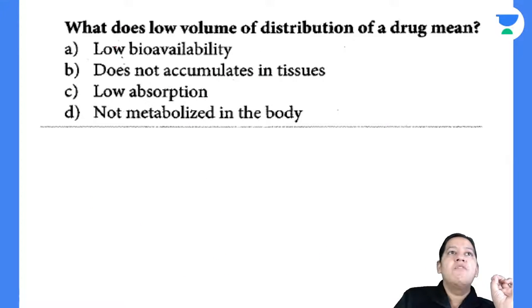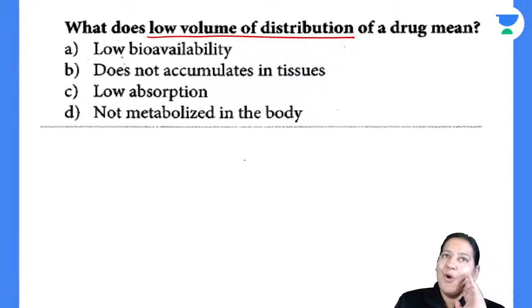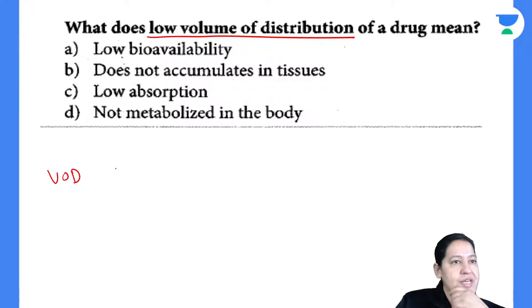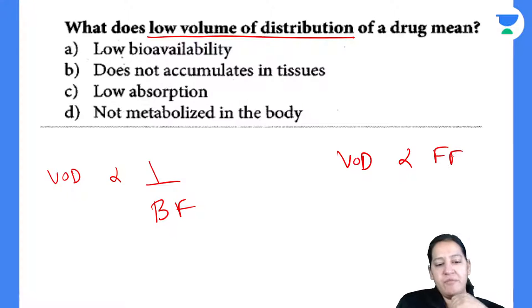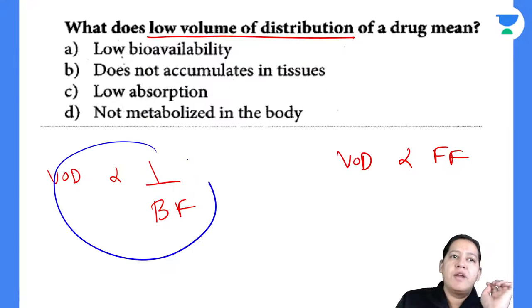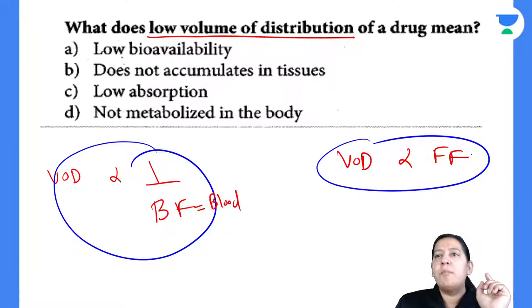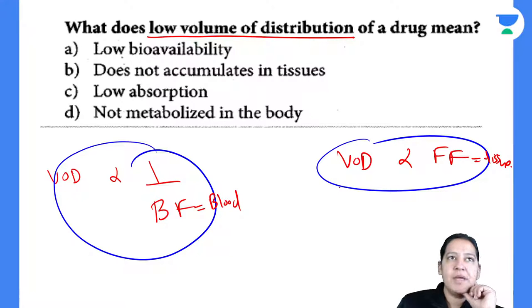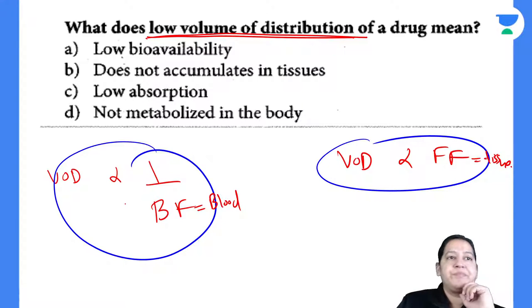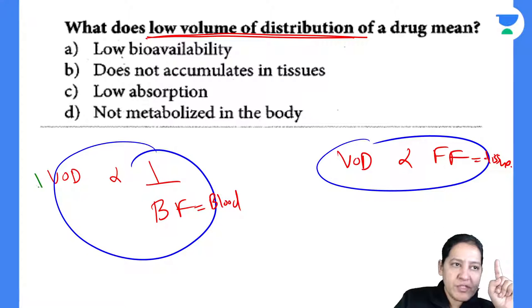Next theory question: what does low volume of distribution mean? Volume of distribution is inversely proportional to bound form and directly proportional to free form. If volume of distribution is low, then bound form is high and free form is low. Low free form means low tissue entry. High bound form means high blood concentration. Summary: low volume of distribution means the drug is more in the blood and less in the tissue.